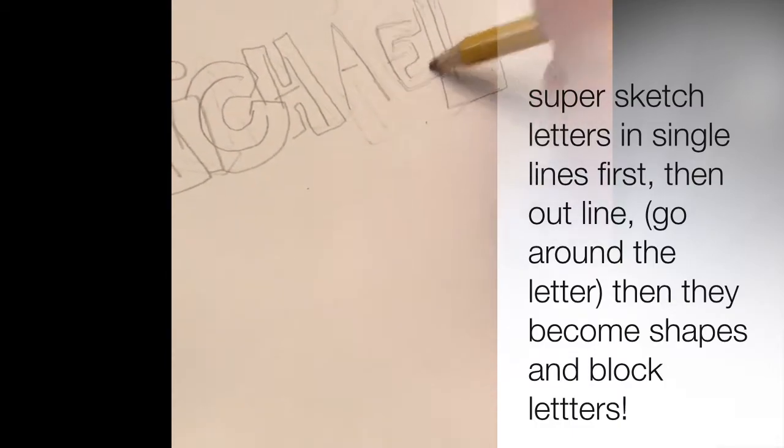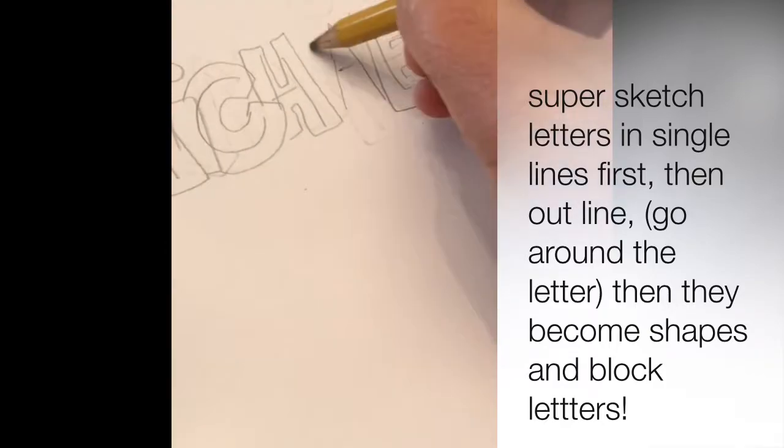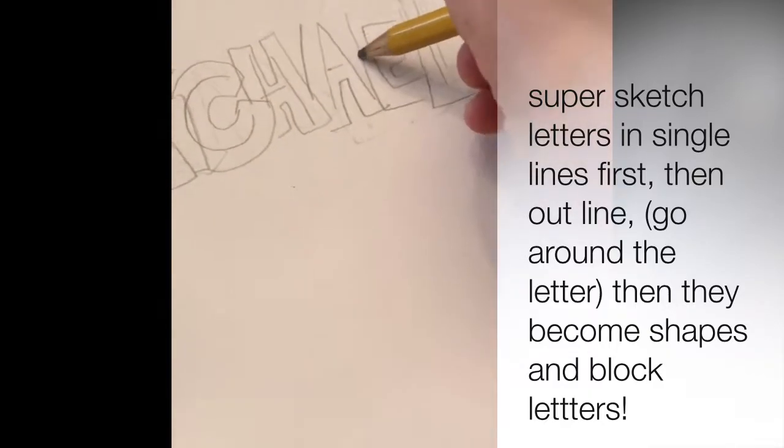Then I go and I outline the A, the E, and the L with an extra line beside it. This turns into a block letter.